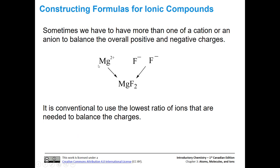Sometimes we have a two plus cation and need to balance the charges. For magnesium fluoride, if we only add one fluoride anion, we still have an overall plus one charge on the compound. So we actually need two fluoride anions to balance out the charge on the two plus magnesium cation. We write magnesium with an assumed subscript one, and fluoride with subscript two. It is conventional to use the lowest ratio of ions — writing magnesium subscript two and fluoride subscript four, while not incorrect, is not conventional.